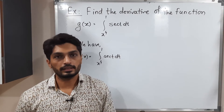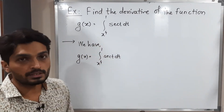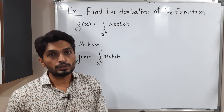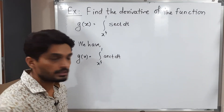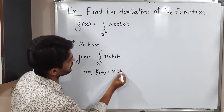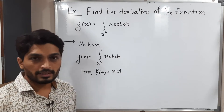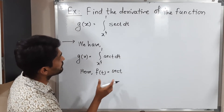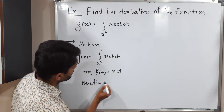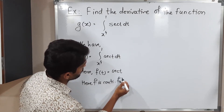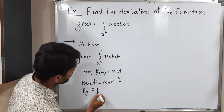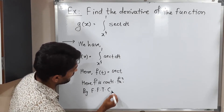Let us discuss the second example. We have g of x equal to this integration, which I have already copied here. The function inside the integral is sec t, so our f of t is sec t. f of t is equal to sec t. It is continuous on its domain. So f is a continuous function on that particular domain. By the First Fundamental Theorem of Calculus —